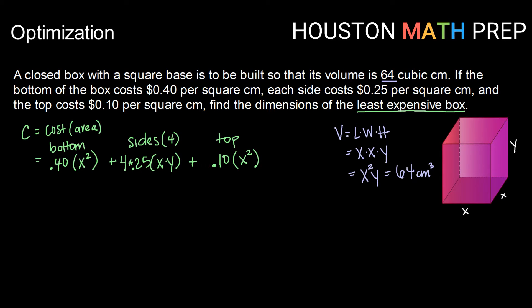So there we have our cost function. Let's go ahead and simplify by combining some like terms and cleaning up our coefficients. So we have 0.4x squared plus 0.1x squared which makes 0.5x squared, plus if we do 4 times 0.25 that just gives us 1, so we just have plus 1xy.